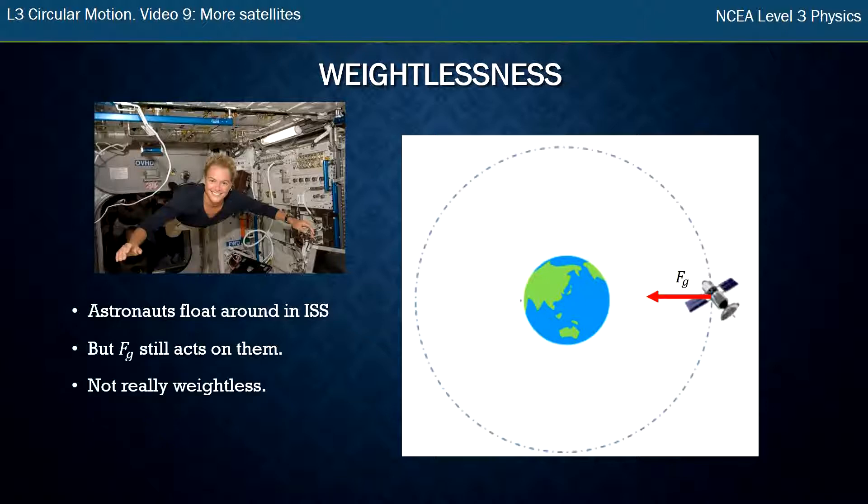So they're not really weightless because the force of gravity is acting on the space station and on them, even though we see them floating around. We call this apparent weightlessness to keep it separate from the idea of actually being truly weightless, which would be out in deep space, away from any other large body like a star or a planet. This apparent weightlessness, or microgravity, is the other name that's given to it.